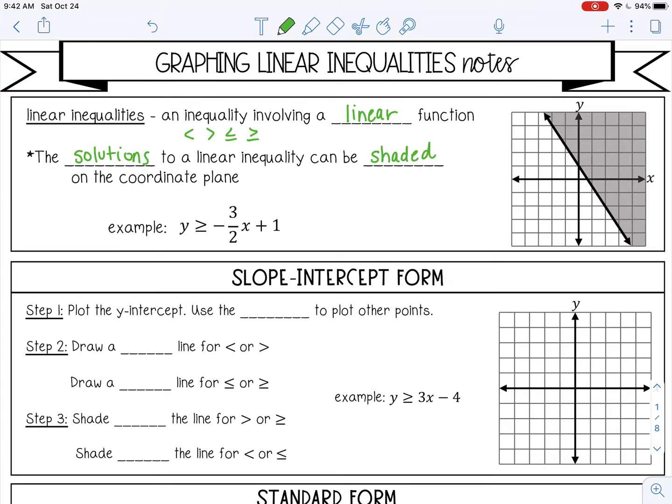Let's look at this example. This inequality says y is greater than or equal to negative three-halves x plus one. If this was a linear equation, my y-intercept is one. My slope is negative three over two, which means it rises three and runs two. Then I would connect the points and draw my line.